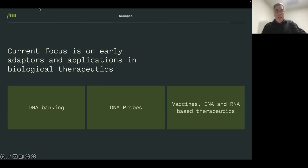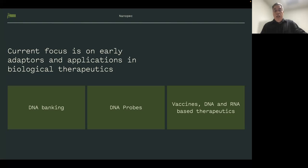Our current focus is on early adopters — companies and academics who want to try this for applications in biological therapeutics. DNA banking is essentially done — we're happy with where we got with that. Right now our focus is vaccines and DNA/RNA-based therapeutics. We don't make them ourselves — we enable our customers to do that in-house. There's a lot of hand-holding and resistance to break the habit of sending sequences to other countries and risking loss of intellectual property. By making very simple, easy-to-use turnkey solutions, we hope to help them avoid those issues.